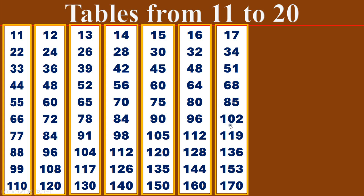17 sixes are 102. 17 sevens are 119. 17 eights are 136. 17 nines are 153. 17 tens are 170.